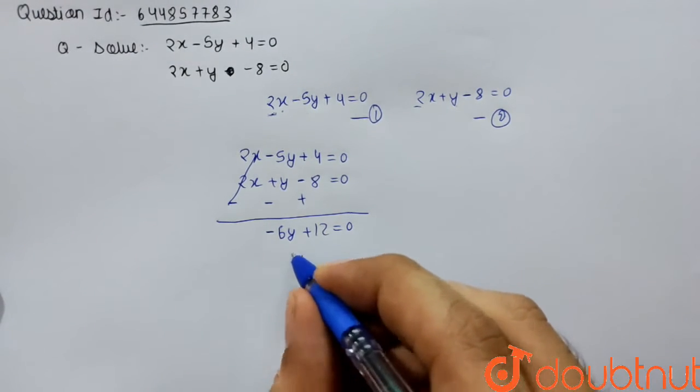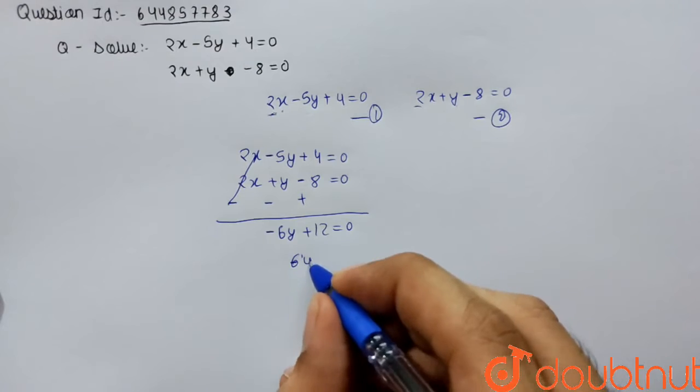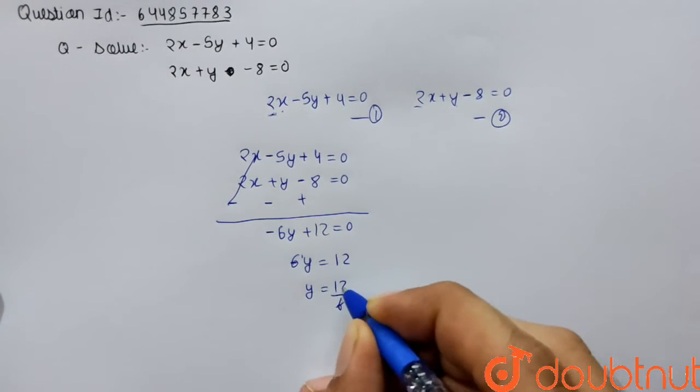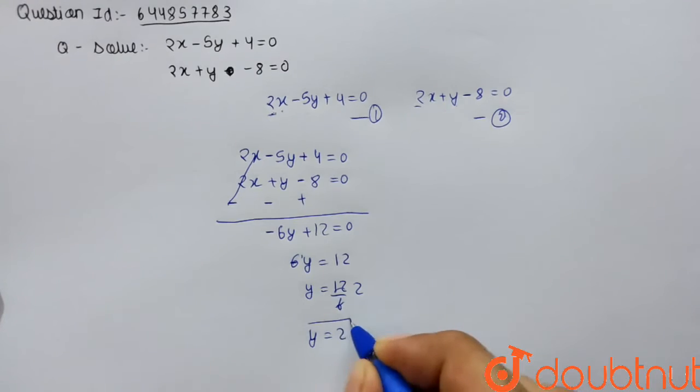So we can send 6y there. So 6y will be equal to 12. So y will be equal to 12 by 6, which is 2. So y is equal to 2.